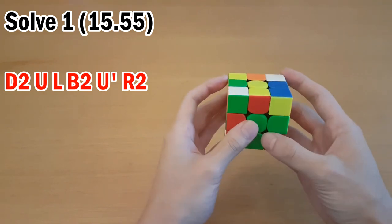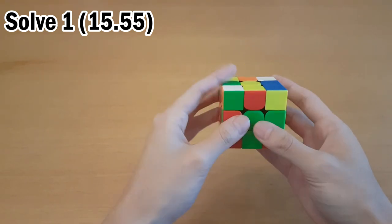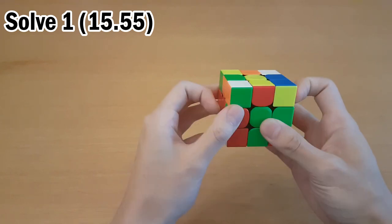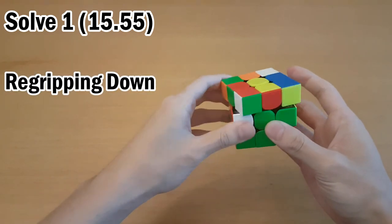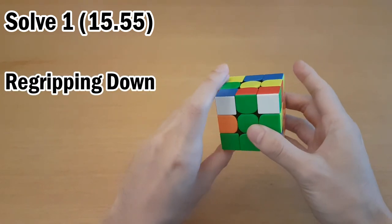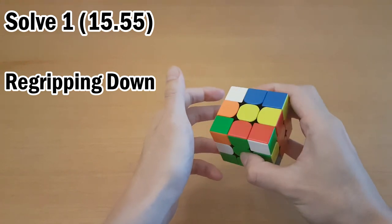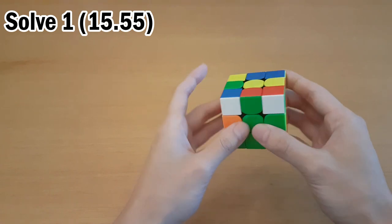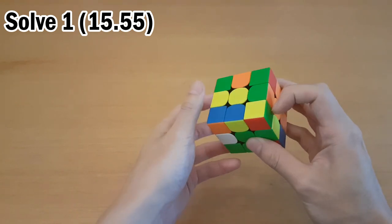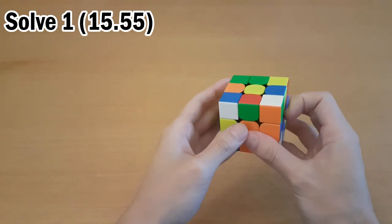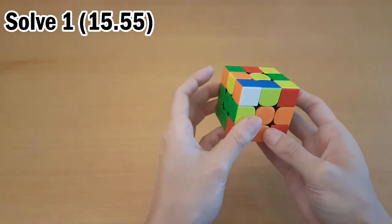Your first pair was this, and you started by taking it out, except you did it like this with the re-grip. Your finger tricks are generally quite good, so this is probably just a bad habit. Remember to use something like this to avoid that re-grip. Then to solve this pair, you pair them up like this, and then insert it into the back slot, which is good as that leaves you with open front slots.